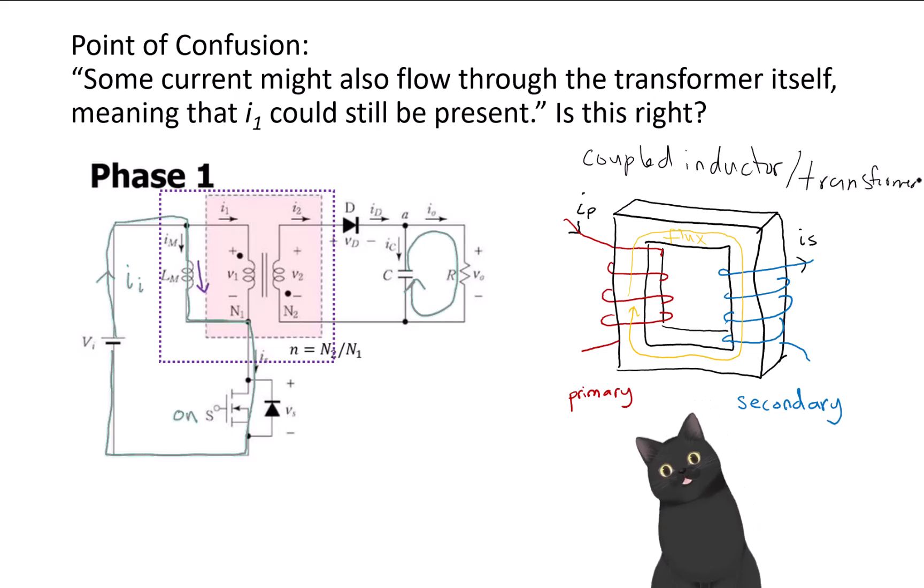And the difference is actually in how you use it. If you want to utilize the magnetizing inductance, then it's a coupled inductor. If you don't want to use the magnetizing inductance and you want all the power in to go out, then it's a transformer. So I'm going to keep using the word coupled inductor because that's what a flyback wants to use - the inductance, which is actually what's being shown here.